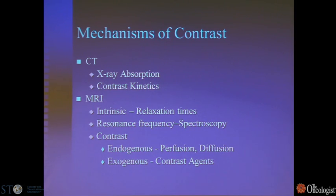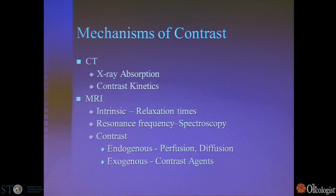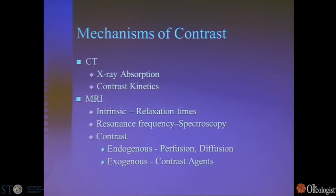With CT, the image contrast is based on X-ray absorption. We commonly give intravenous contrast and rely on contrast kinetics. Because we are dealing with ionizing radiation, we are limited as to how many times we can scan to map out contrast dynamics. With MRI, we do not have those limitations, and we have many different levers we can use to develop image contrast.